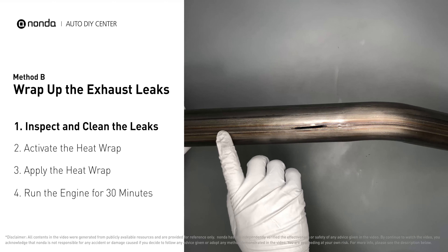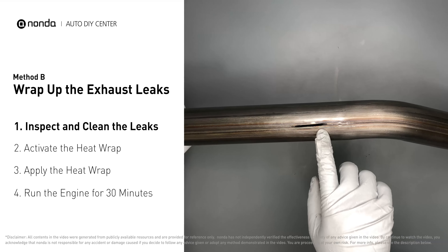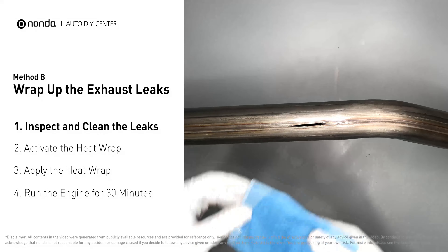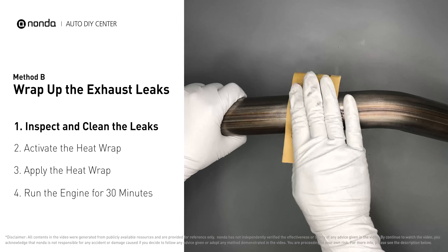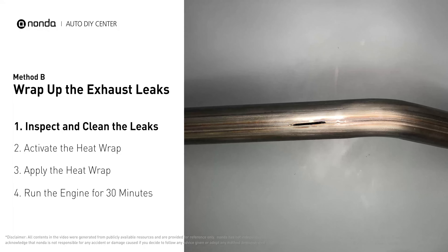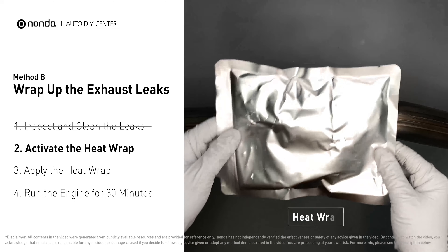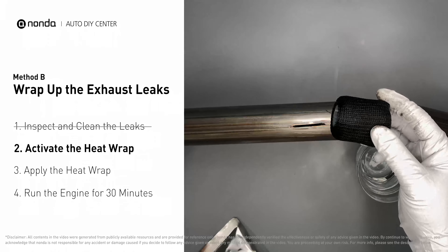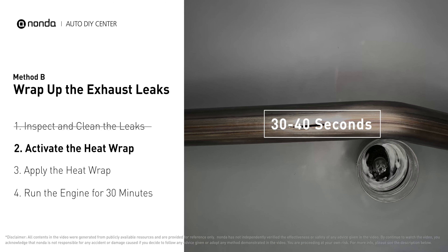Method B: Wrap up the exhaust leaks. Exhaust pipes are made out of rolled steel and there is a welded seam on them. The seam will often rot and create a leak. First, get sandpaper and a wet wipe to clean the leaking area for better application. Then get the heat wrap out and put it in water for about 30 to 40 seconds to start the activation process.